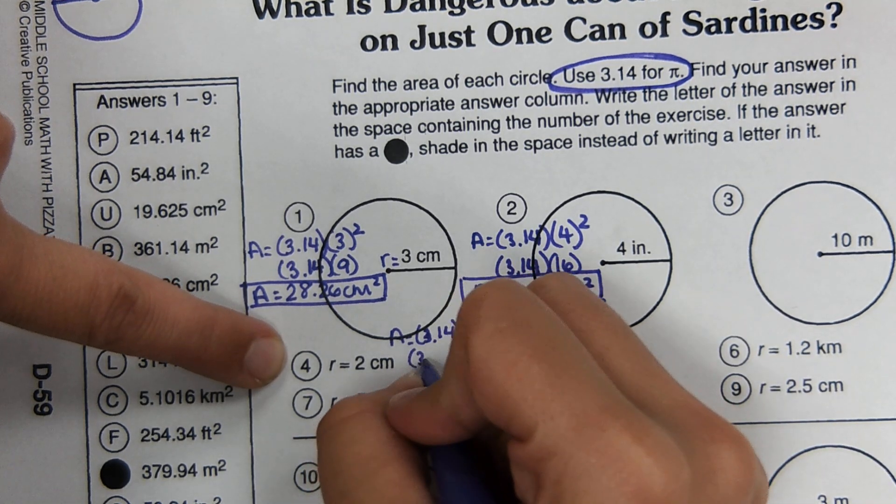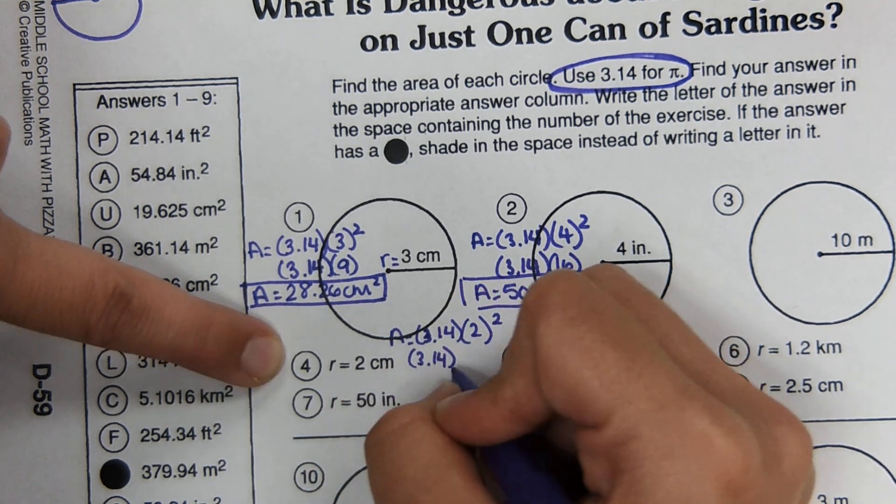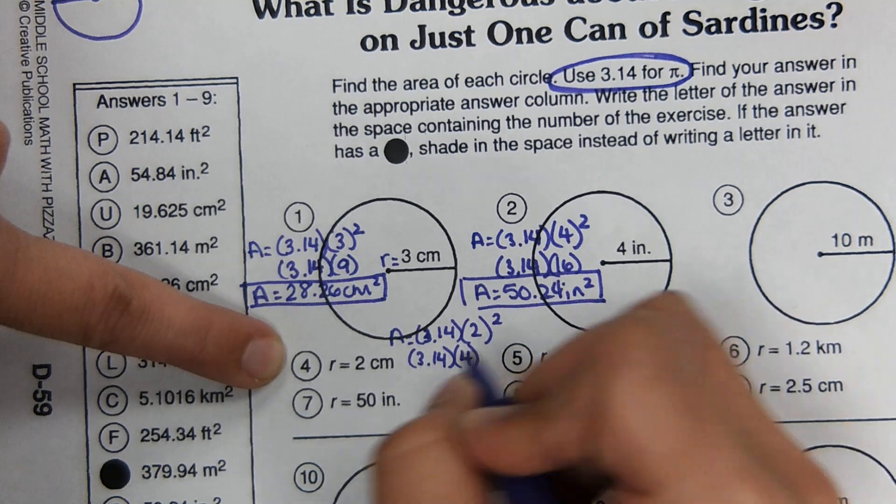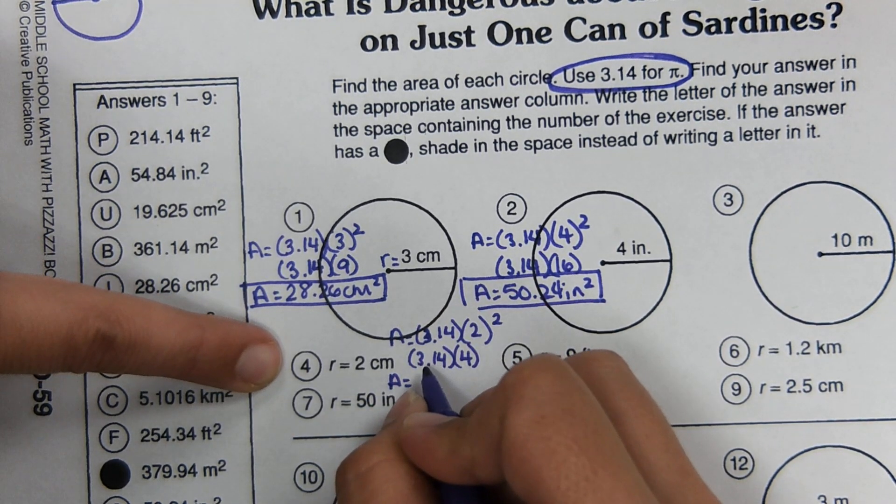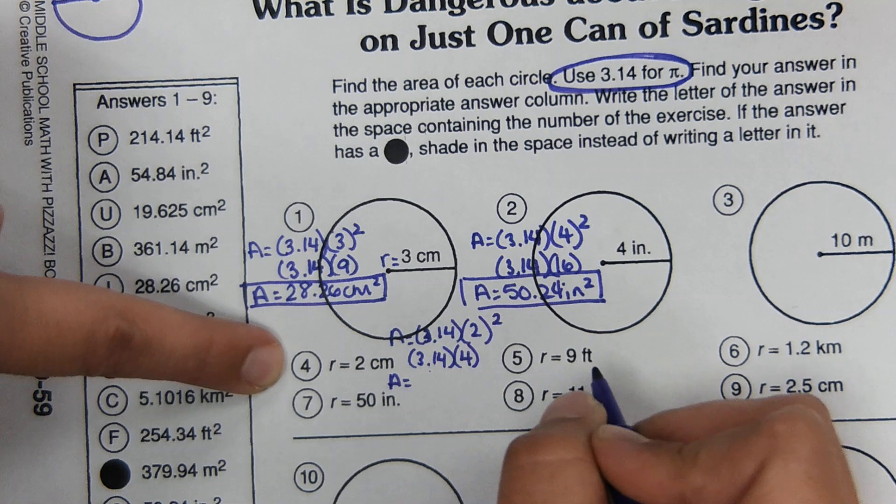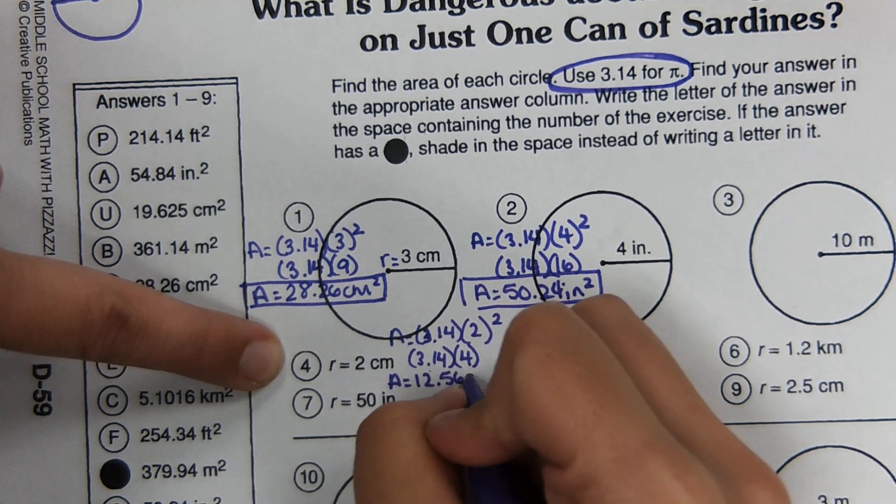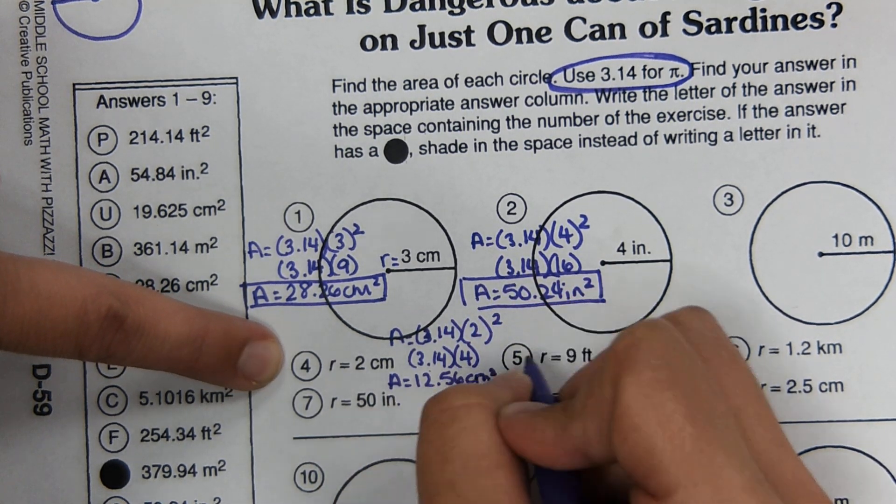So then write it down, 3.14. Two squared, two times two would be four. So then the area, 3.14 times four is 12.56 centimeters squared.